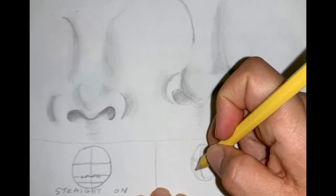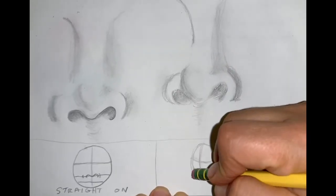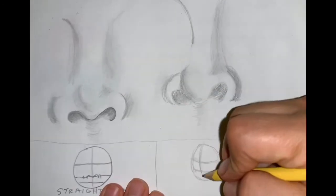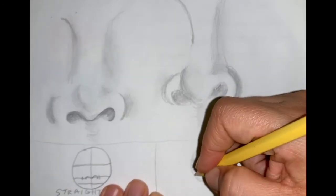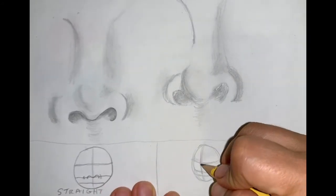Bring it across like this, and then halfway again. My circle wasn't quite even, so I'm going to erase that so I can put the line in for the mouth.